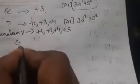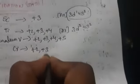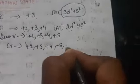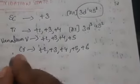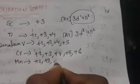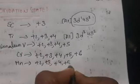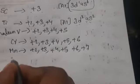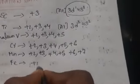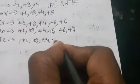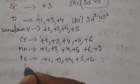For chromium it will exhibit plus 2, plus 3, plus 4, plus 5, plus 6. For manganese it is going to have plus 2, plus 3, plus 4, plus 5, plus 6, plus 7. For iron it is having plus 2, plus 3, plus 4, plus 5, plus 6 — again it is reducing coming to here.